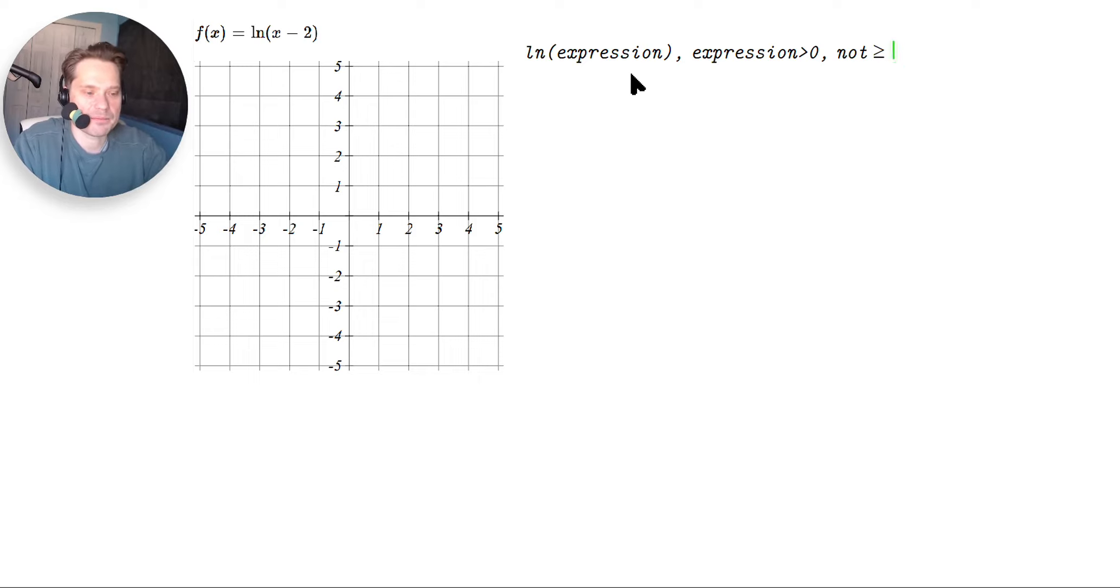In other words, ln of 0, this is DNE. Doesn't exist. It's not defined. So the ultimate value of expression can never be equal to 0 with the ln function. Or you'd be breaking all the rules of math.